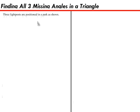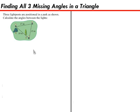Three light posts are positioned in a park as shown. Calculate the angles between the lights and the beautiful well-lit park looks just like this. You can see we've got a triangle here, the corners are the light posts and we know the length in between each light post.